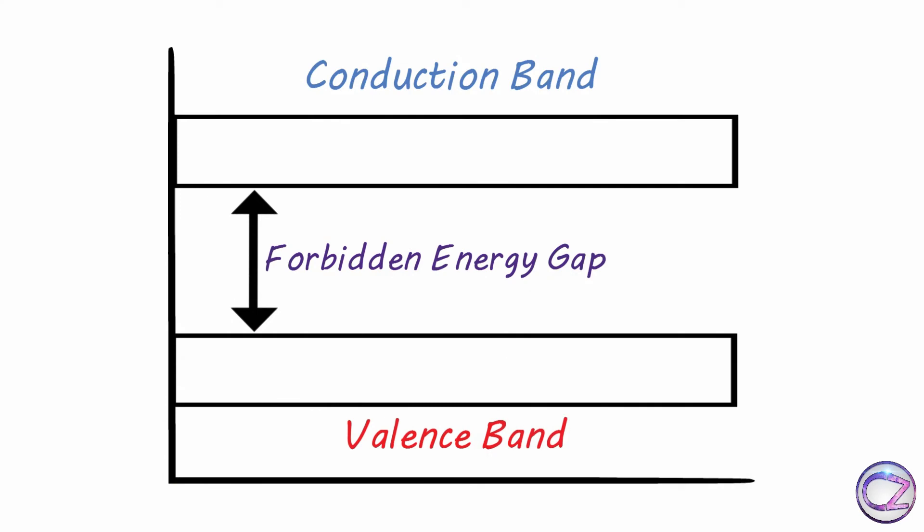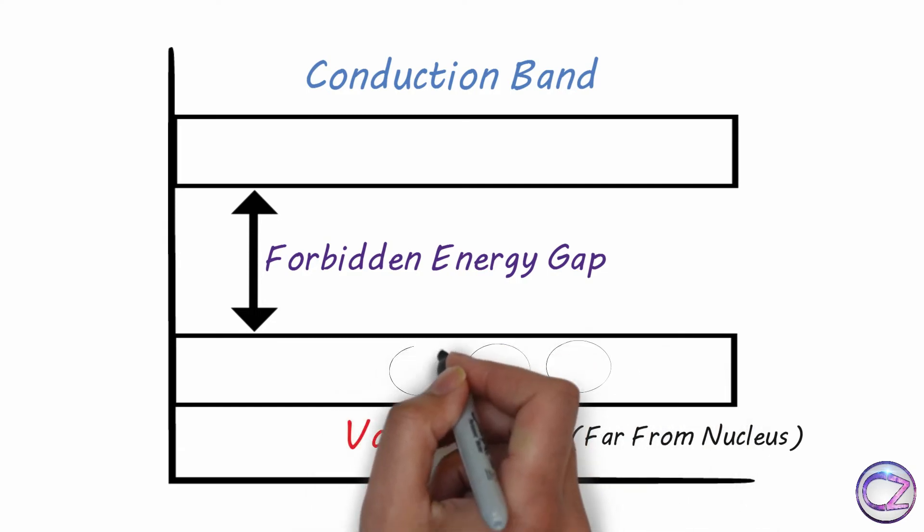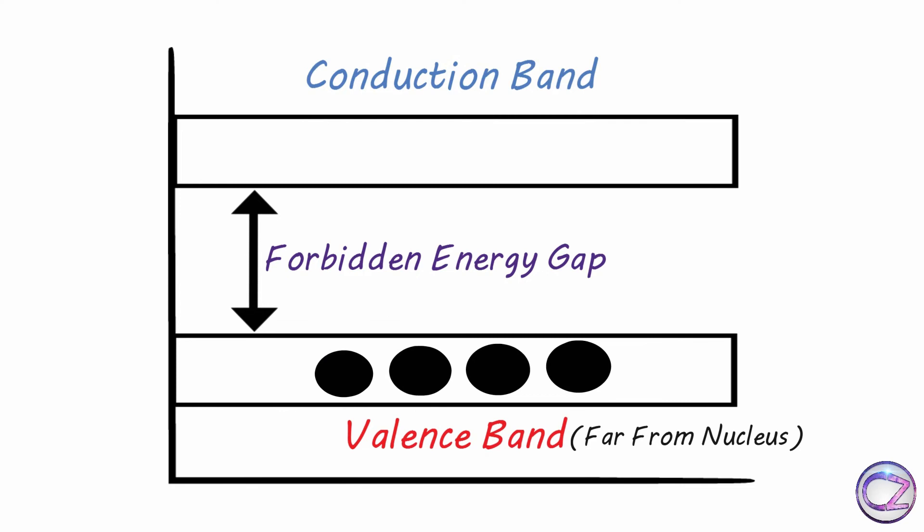Valence band: this band has highest energy and is far from the nucleus. This band is partially or completely filled by electrons. This band is never empty. It's a very important note: this band is never empty.